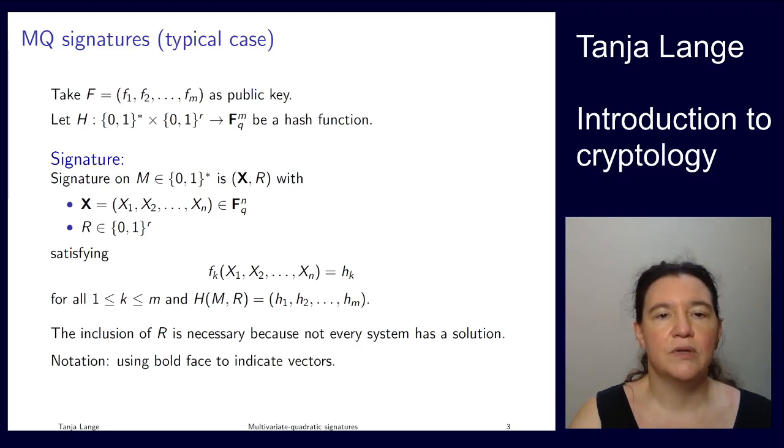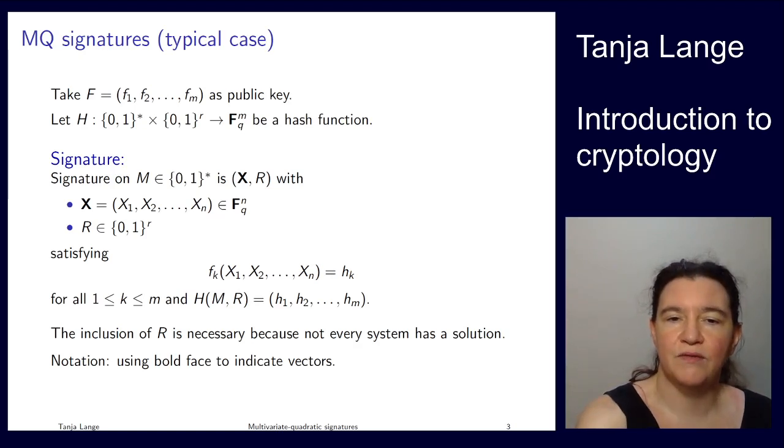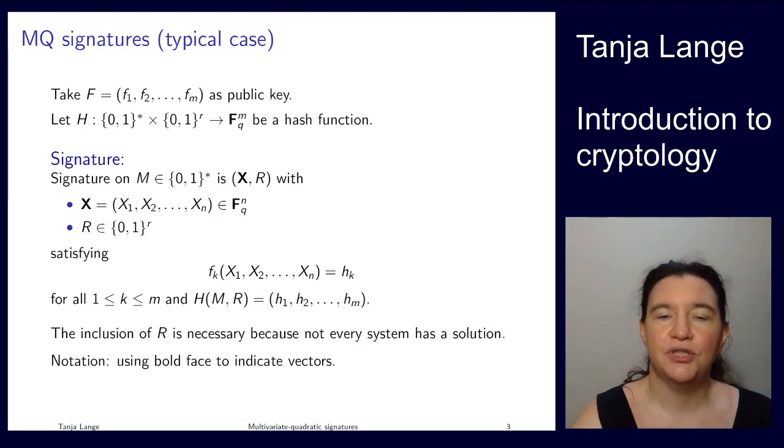Now, let's just look at how it would work if somebody could come up with such signatures. So the signature would be this vector x here, which satisfies that it's a pre-image to this hash function. Then verification is very simple. You just hash the message and see whether all the equations fit.